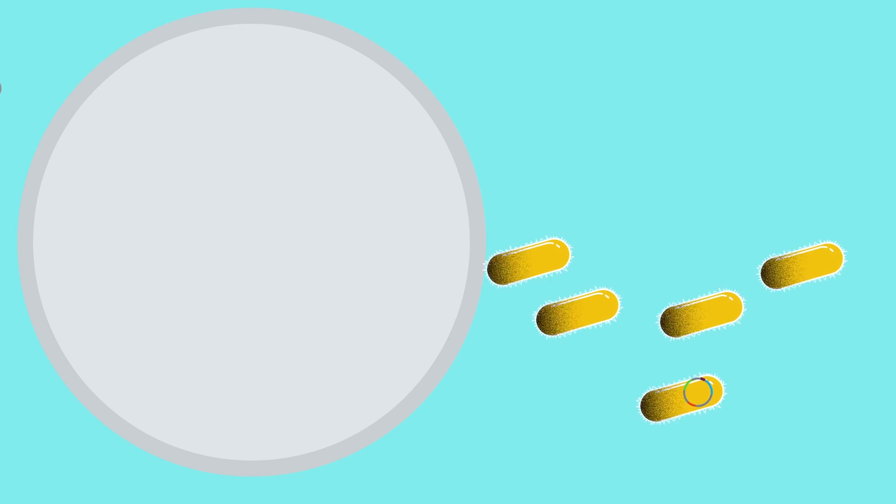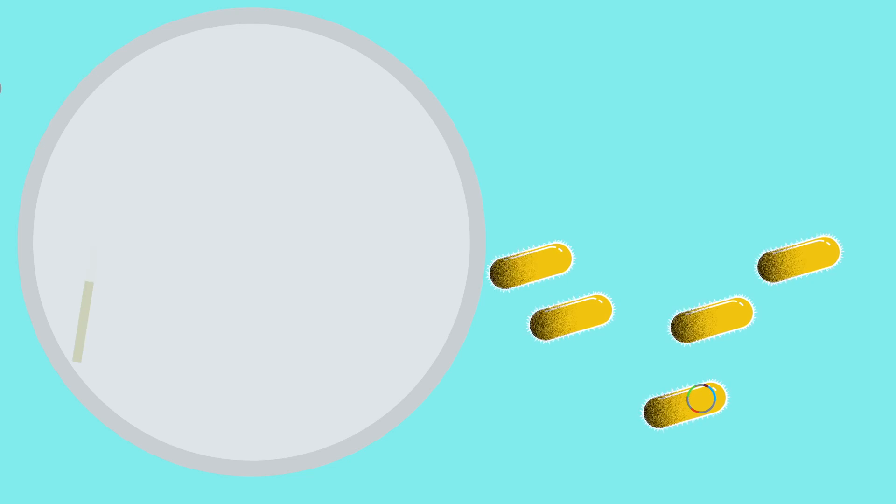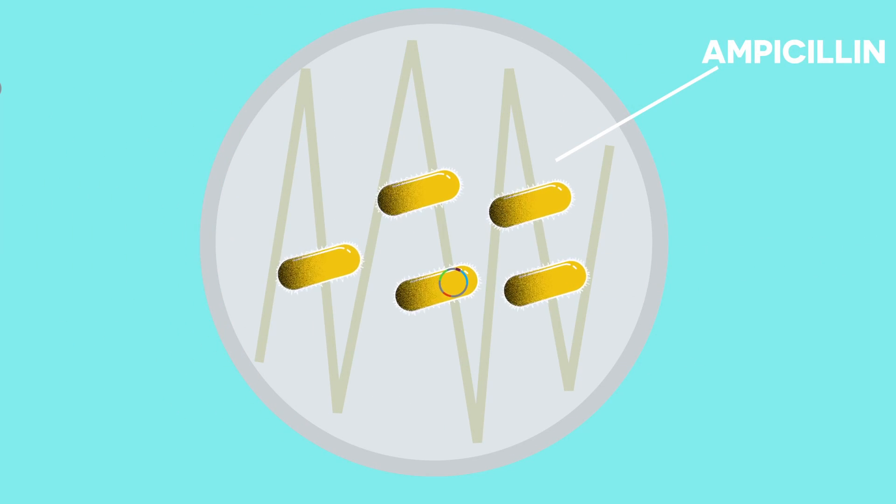In order to separate the ones that did take up the plasmid and the ones that didn't, we have to culture them in antibiotics. Why? Well, remember the plasmid can give special advantages such as antibiotic resistance. The plasmid we use had resistance to the antibiotic ampicillin. Only the bacteria that took up the plasmid containing the ampicillin resistant gene would survive. Slowly, each bacterium without the plasmid would die.